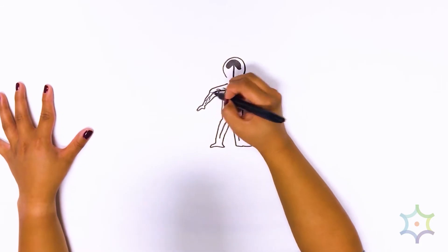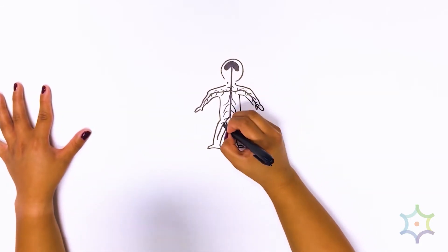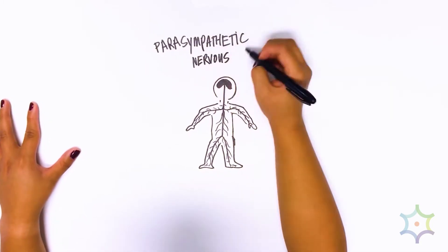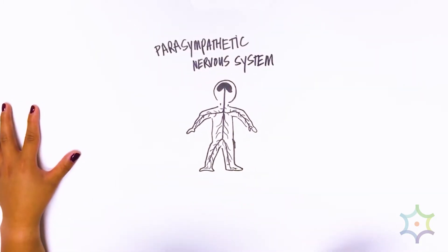In your brain, the TVNS activates what is called the parasympathetic nervous system. This system is what helps you sleep, digest your food, and feel calm.